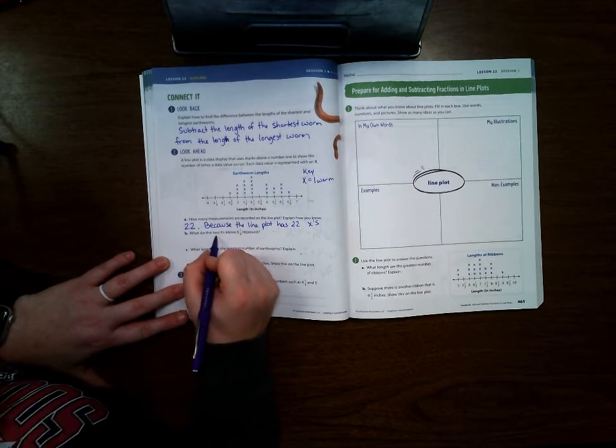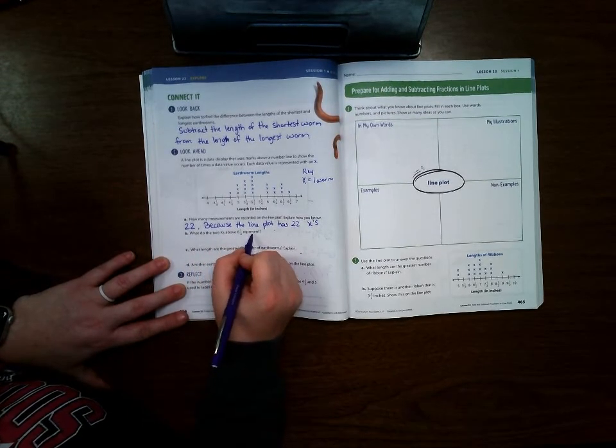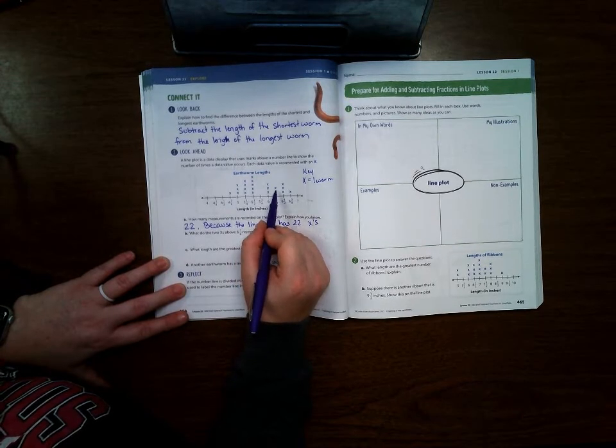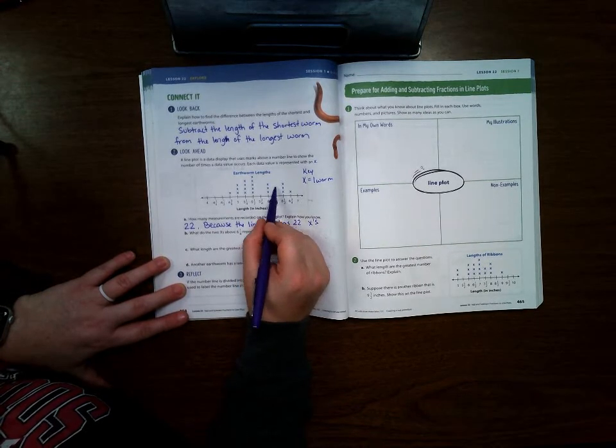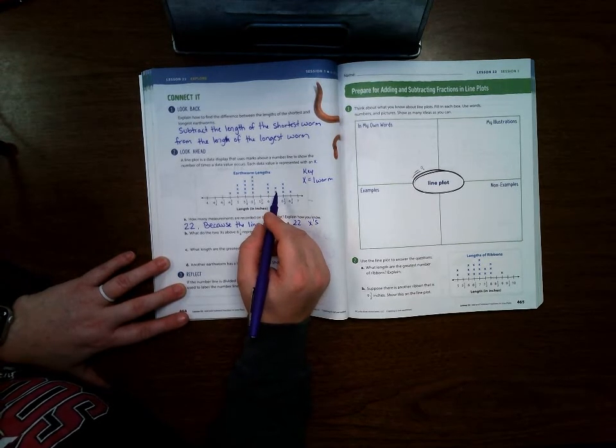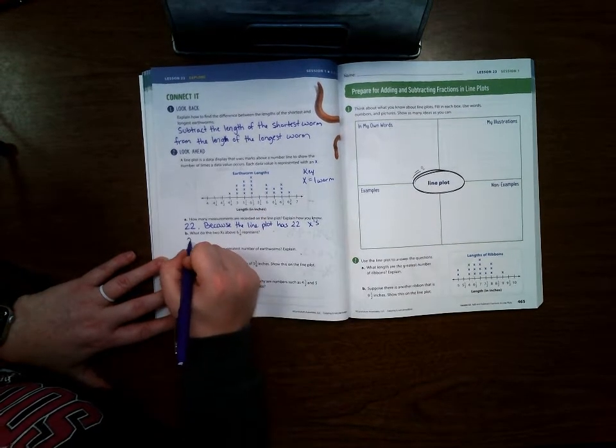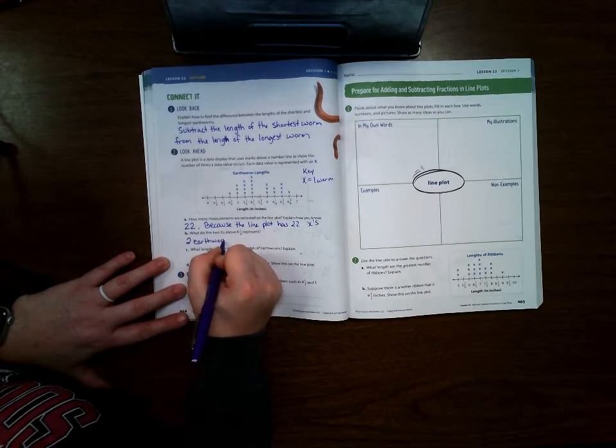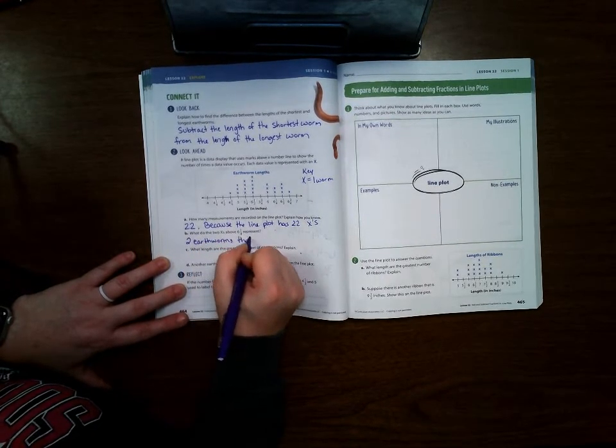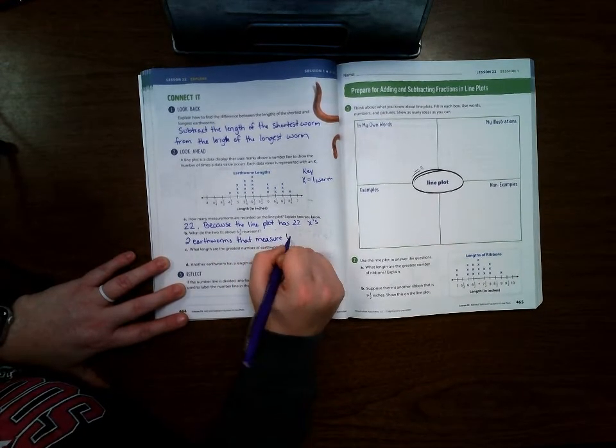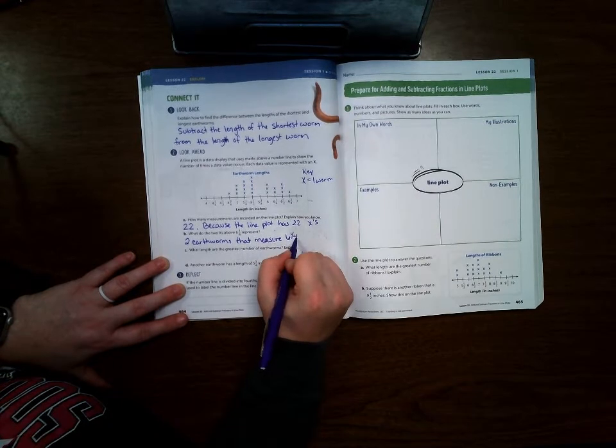What do the two x's above six and one fourth represent? So here's six and one fourth. What does each x represent? Well, each one represents one worm. So that means together, it means that there are two earthworms that measure six and one fourth inches.